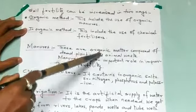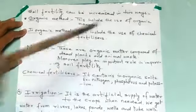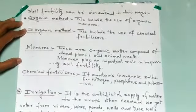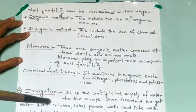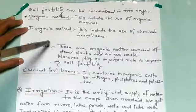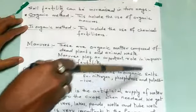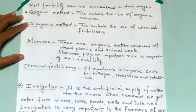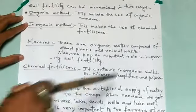What is manure? Manure is organic matter composed of dead plants and animal waste. When dead plants and animal waste are combined, we get manure. This manure plays an important role because it improves soil fertility.